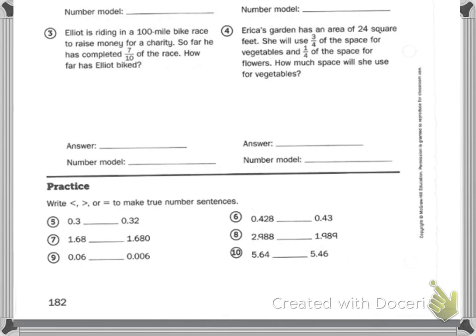Question three says Elliot is riding a hundred-mile bike race to raise money for charity. So far he has completed seven-tenths of the race. How far has Elliot biked? I need to see your answer and your number model.